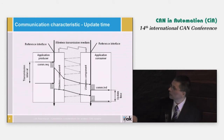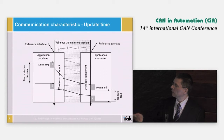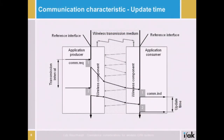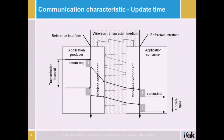Assuming we have a certain transmission interval for one and the same message, the message is given to the wireless component through a certain wireless technology. The update time is then the difference between two consecutive receptions of one and the same message, measured from the time where the last portion of data is given over the reference interface. As you can already see, the update time value is not in every case the same as the transmission interval we would like to have.